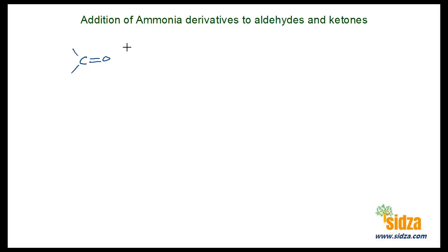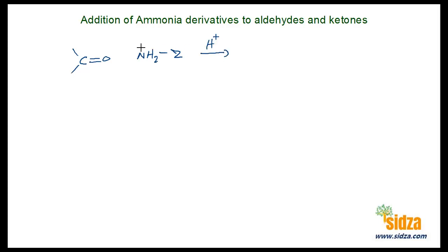Aldehydes and ketones react with ammonia derivatives. In aldehydes and ketones there is a polar carbonyl group. Ammonia is NH3, and if you replace one of the hydrogens by any other group — let's call it Z — you get an ammonia derivative. In acidic medium, these ammonia derivatives react with the carbonyl group.